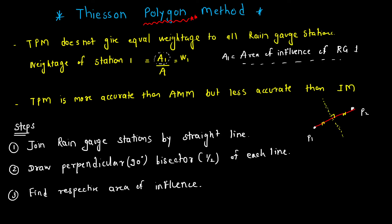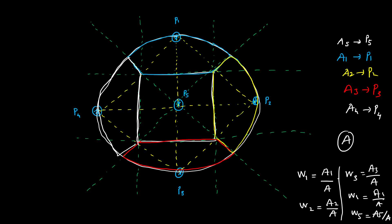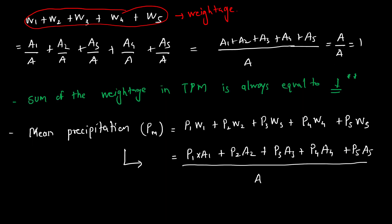The Thiessen polygon method introduces the concept of weightage for each rain gauge station. Weightage equals the area of influence of a station divided by the total catchment area. The area of influence is found by joining stations with straight lines, drawing perpendicular bisectors, then measuring the enclosed area. The sum of all weightages always equals one, and mean precipitation is P1·W1 + P2·W2 + ... + Pn·Wn.